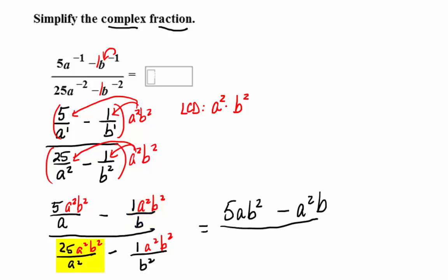Now in the bottom left, what's going to cancel? A squared, leaving us with 25b squared. Minus in the bottom right, what's going to cancel? The b squared, leaving just a squared. That's kind of the key step right there. The rest is the simplifying.